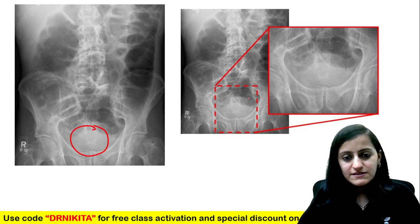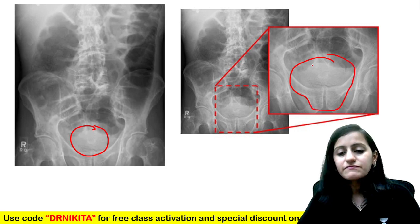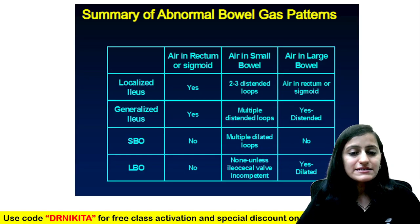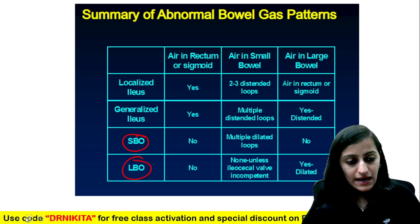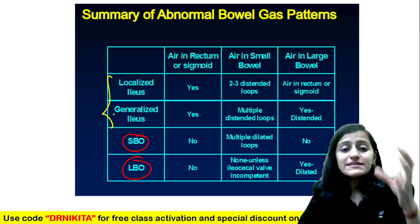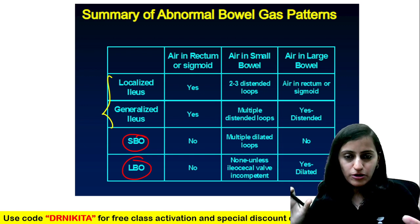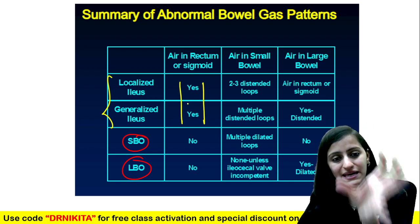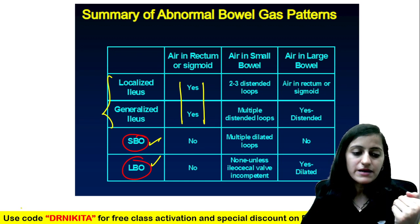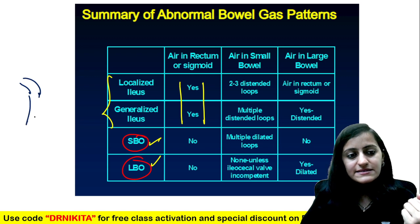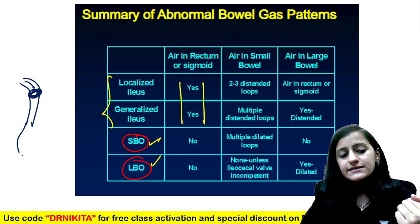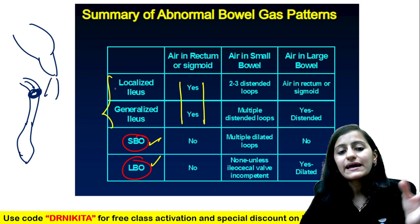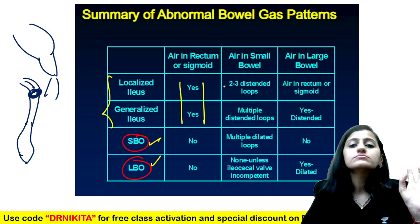In the magnified image of the same radiograph, we don't see air in the rectum — there is something impacting, which is the fecal impaction. For the summary of the abnormal bowel gas pattern: whenever it is ileus — a functional obstruction, not mechanical — air will be present in the rectum and sigmoid. When it is a mechanical obstruction, whether small bowel or large bowel, air in the rectum would be absent. If it is just functional obstruction (ileus), the air would go ahead and we would see it present in the rectum. This is how we differentiate ileus from obstruction.